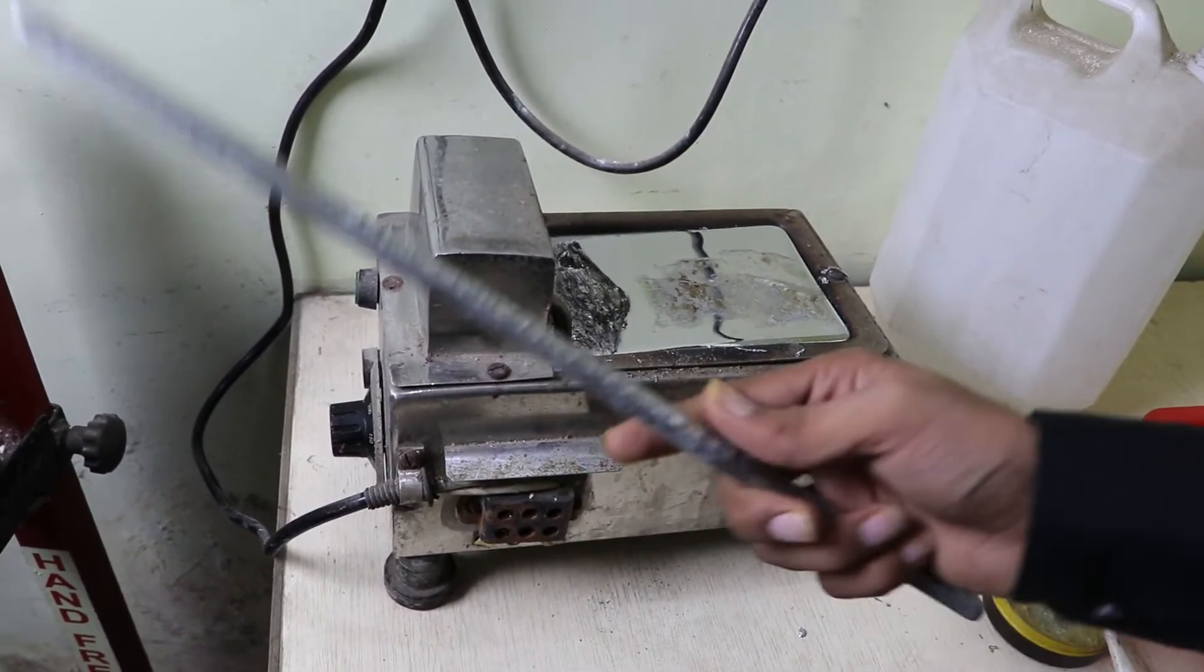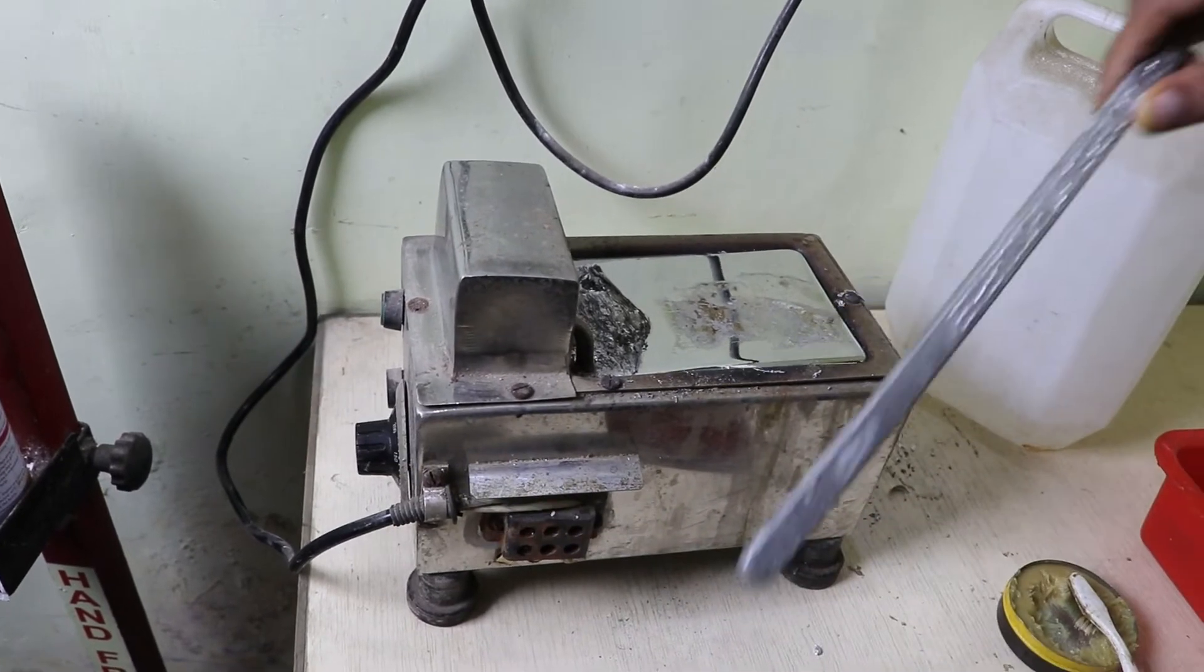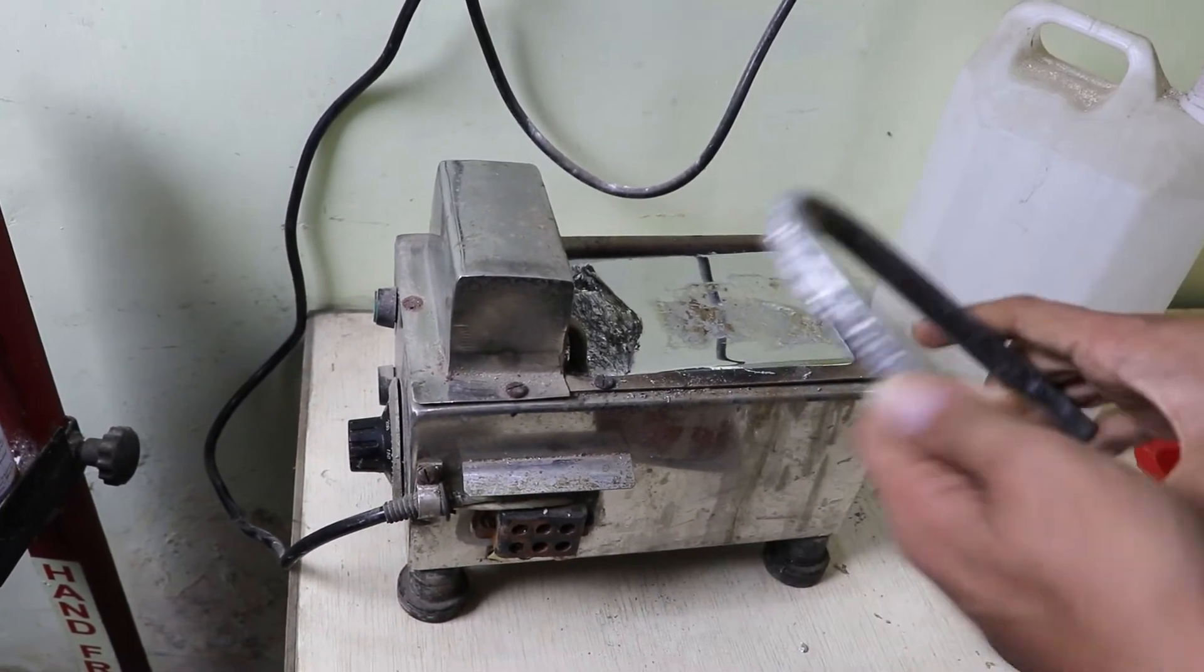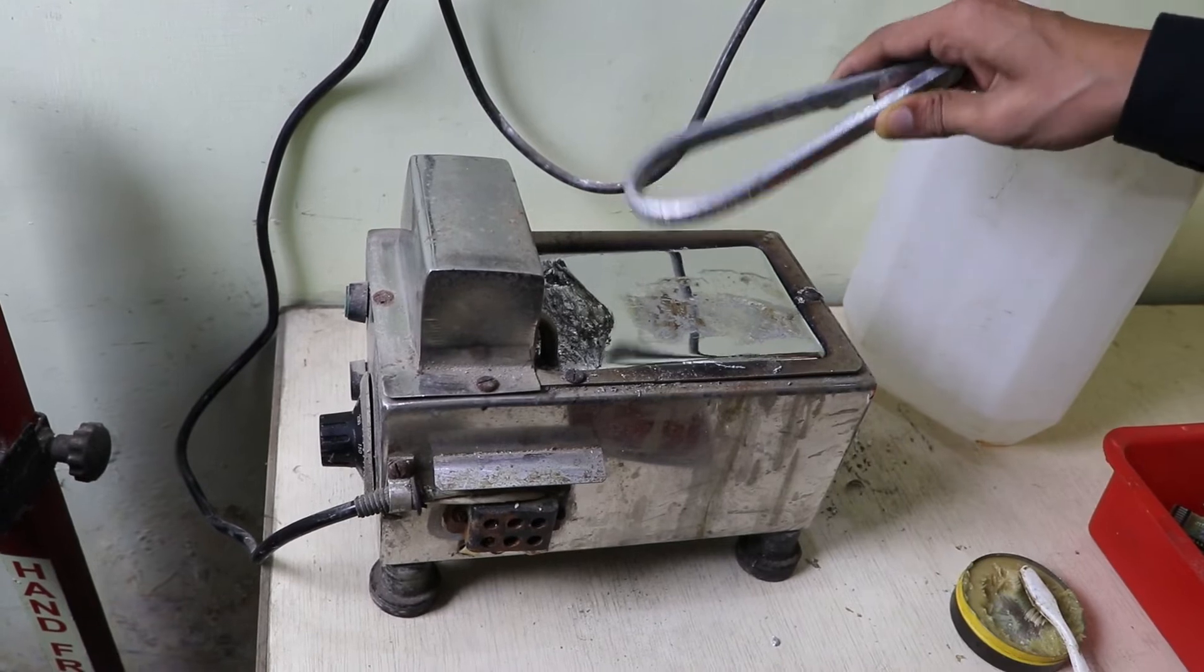This is the dip soldering machine, a very small one. You can buy it for around 8000 rupees. This is the solder rod, made up of various materials which I'll discuss later.